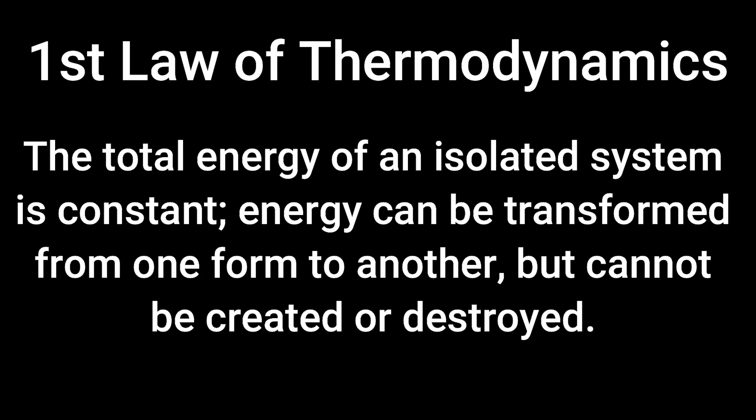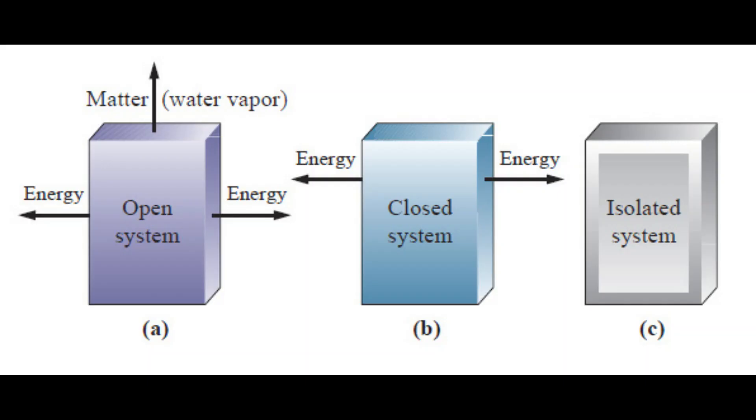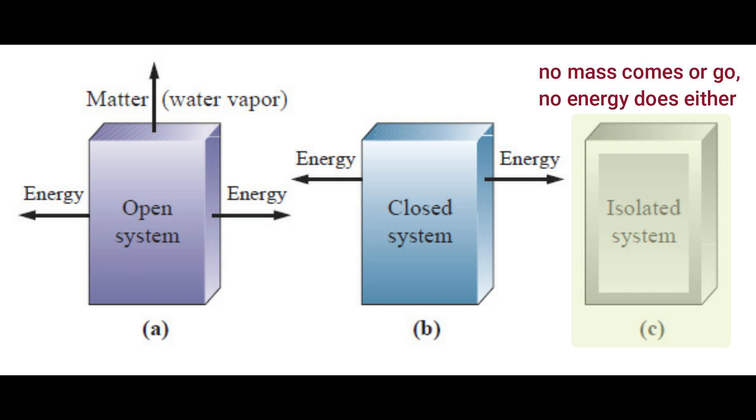The first law of thermodynamics states that the total energy of an isolated system is constant. Energy can be transformed from one form to another, but cannot be created or destroyed. We also call this the law of conservation of energy, because the amount of energy does not change — only the form of the energy does. The term isolated system refers to a system where external energy cannot enter and internal energy cannot leave.